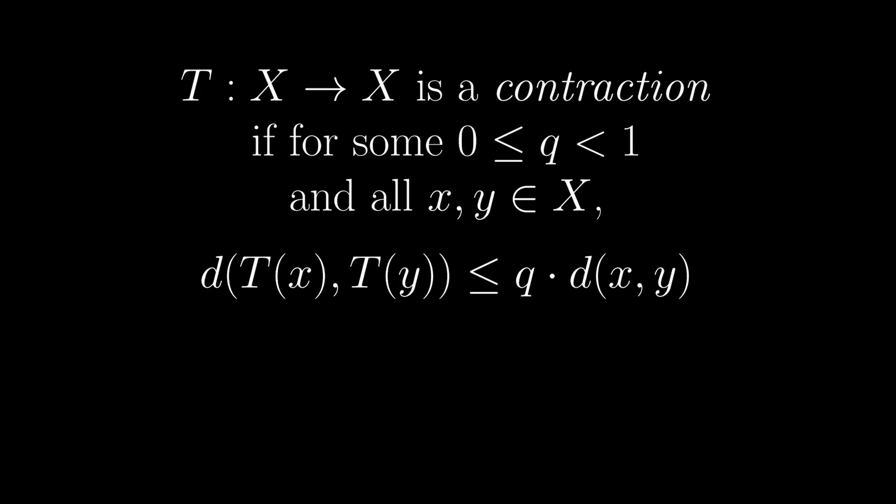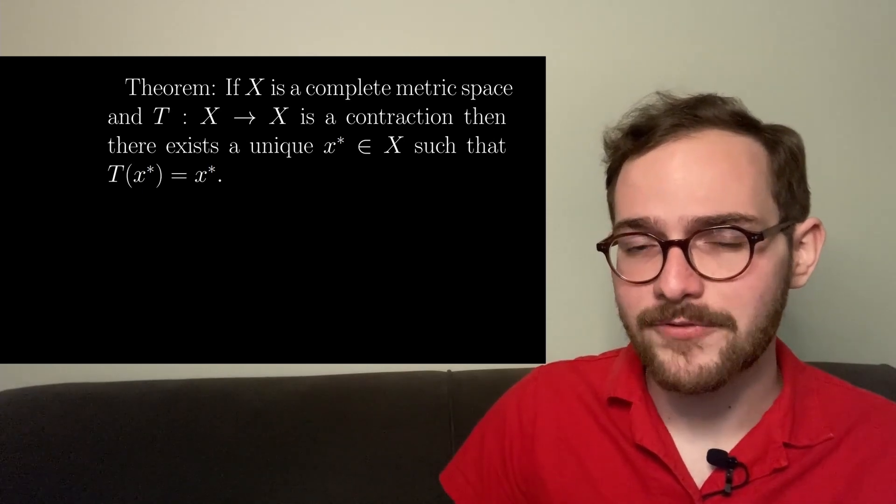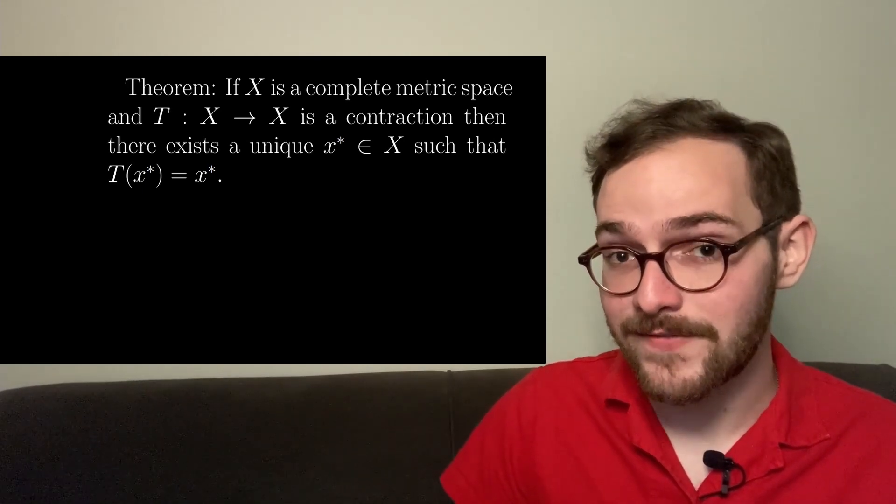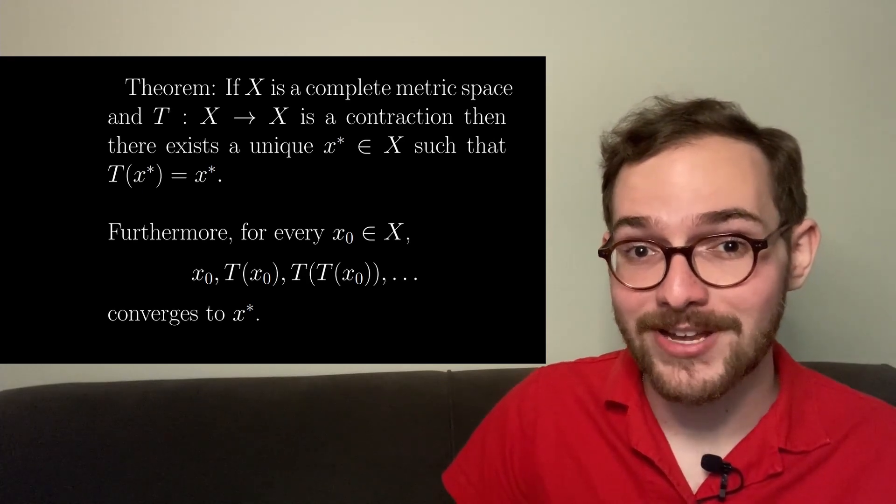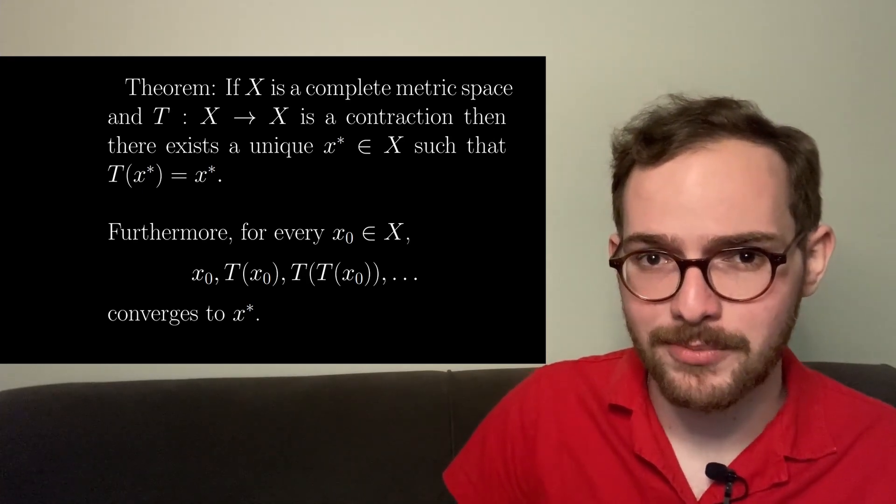The Banach Fixed Point Theorem is about a special type of transformation that brings points closer together called a contraction. A transformation t is called a contraction if for any two points x and y, t of x and t of y get closer together by some constant factor q. The theorem tells us that every contraction has a unique fixed point, and what's even better is that it tells us how to find the fixed point.